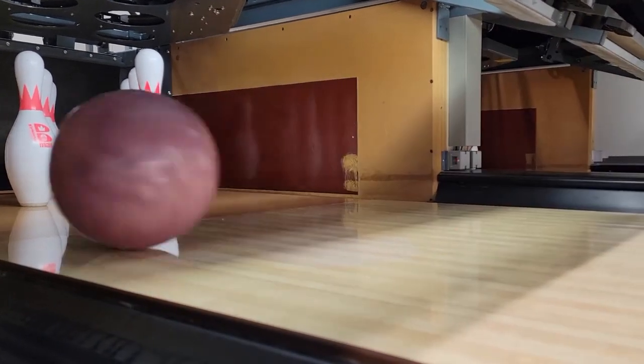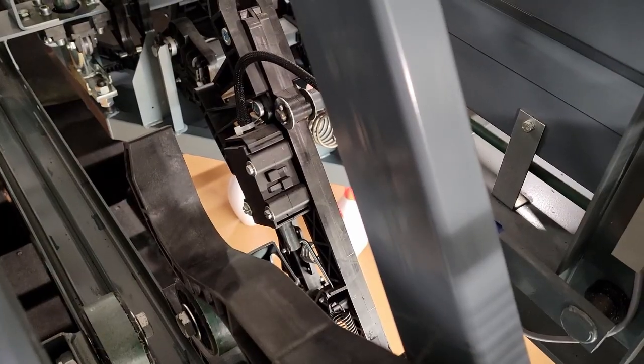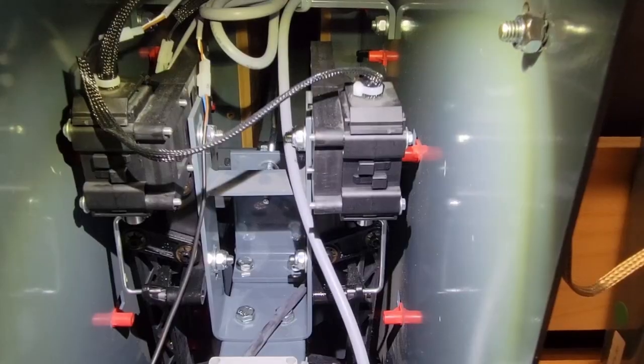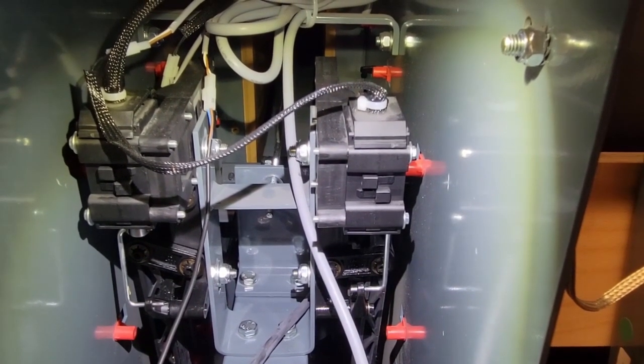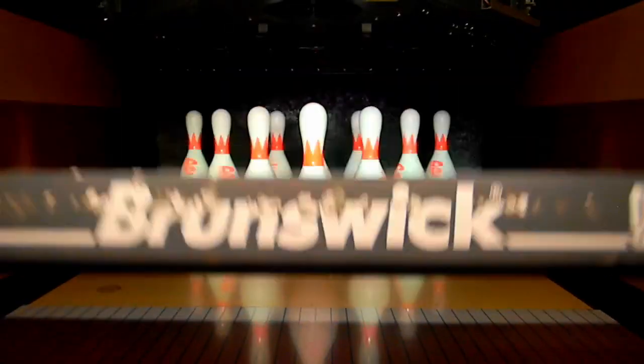First a ball detect occurs which energizes the sweep release solenoid to lower the sweep and energizes the ball door locking bolt solenoid. When the sweep is fully lowered the G switch is actuated.